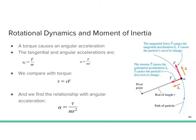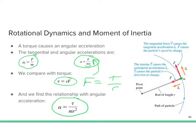For a particle, the tangential acceleration is the net force divided by the mass. The angular acceleration is the net force divided by the moment of inertia, which is just mass times radius. Since torque equals radius times force, solving for force gives torque divided by radius. Plugging that in, the angular acceleration for a particle becomes tau divided by mr squared — that's the formula for a particle pivoting about some massless rod.